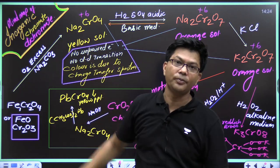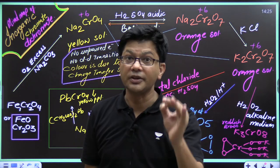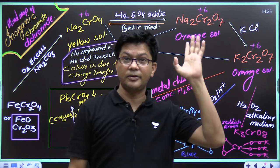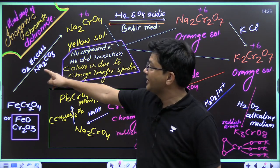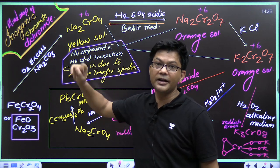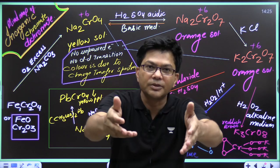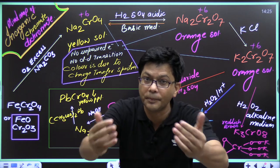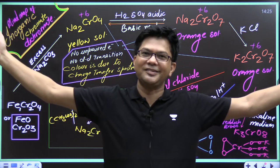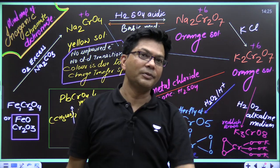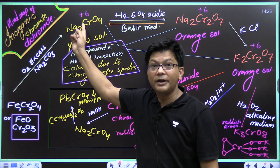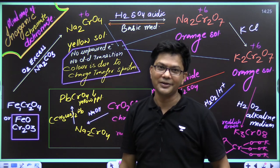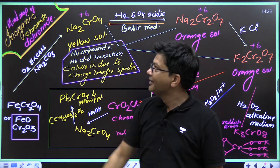How to find out that you are going to get chromate and not dichromate? Remember: whenever the medium is basic, chromate is stable — not dichromate. The medium is basic because sodium carbonate is added. Salt of a strong base and weak acid makes the solution basic, and whenever the medium is basic, chromate will be the product. Chromate of sodium, potassium, and even lead — they are yellow in color.